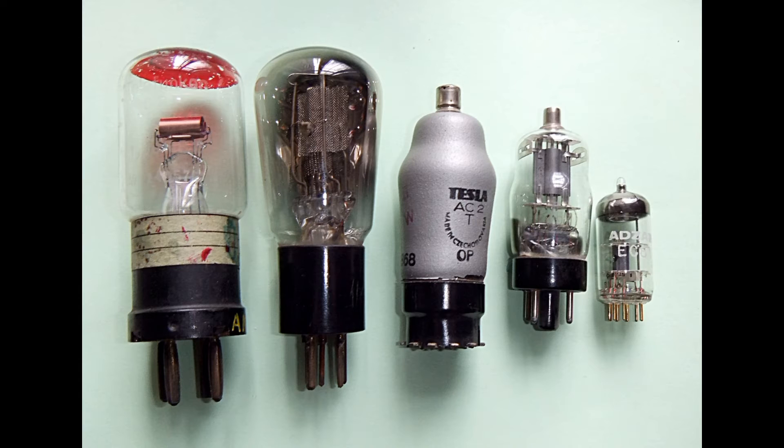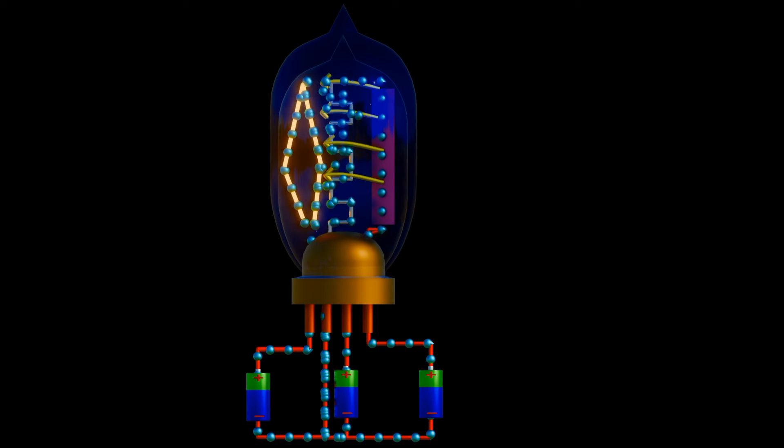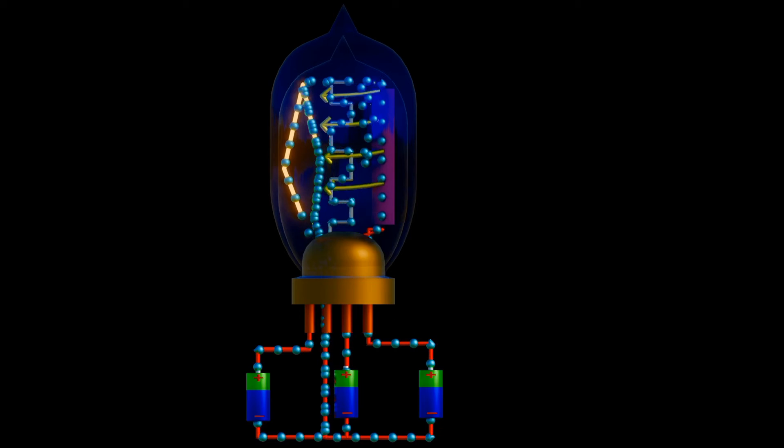Physically, the grid is usually formed as a wire spiral around the cathode and in the space between the it and the plate. The spiral is loose enough that there is space between the wires for the electrons to pass.